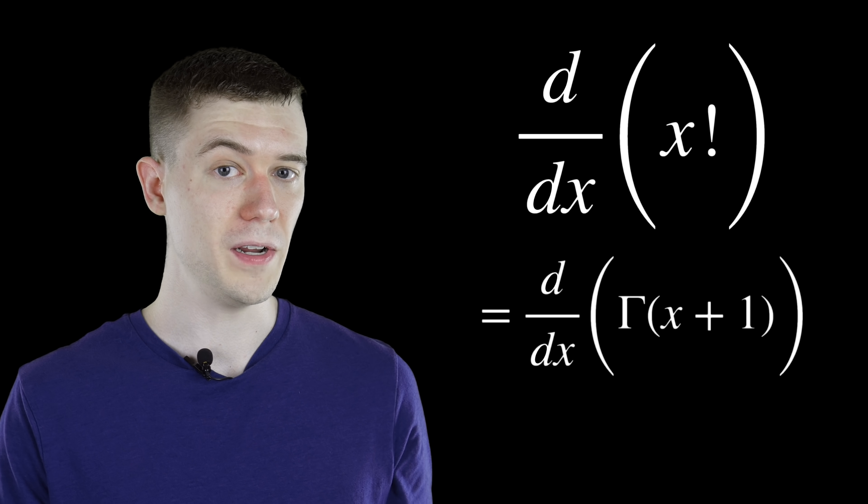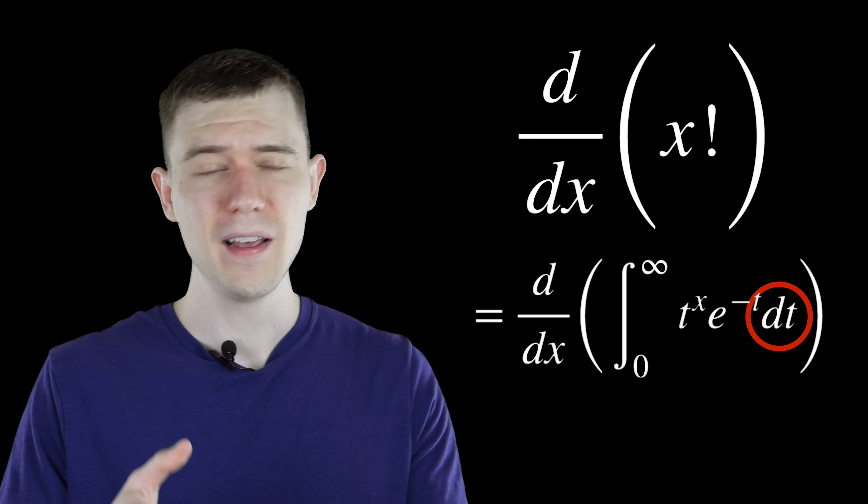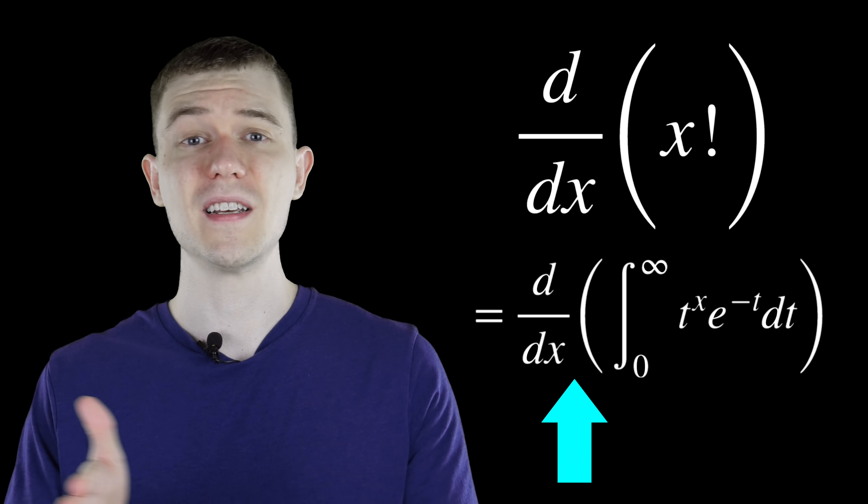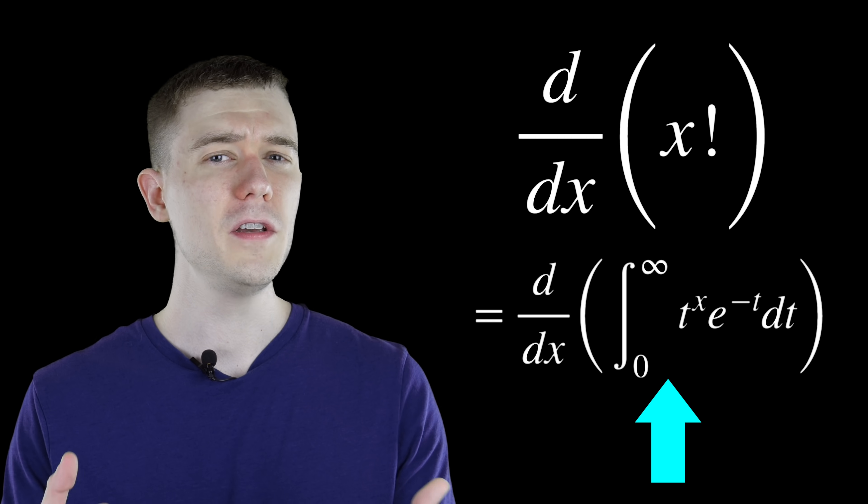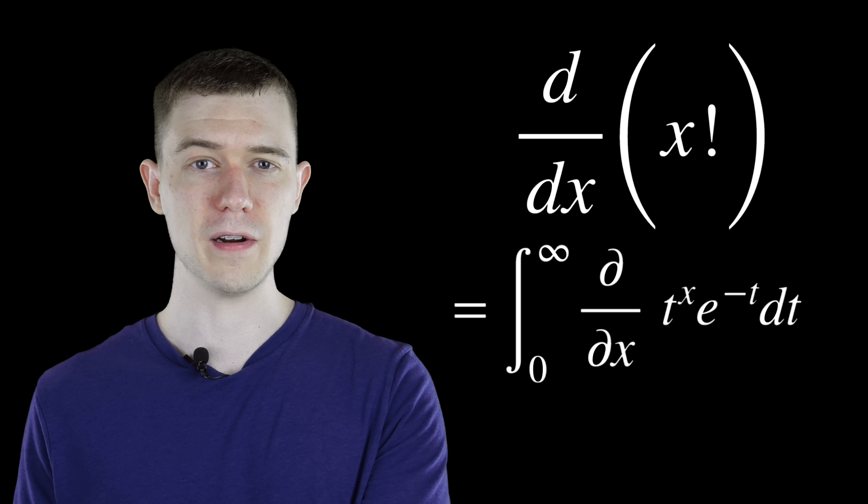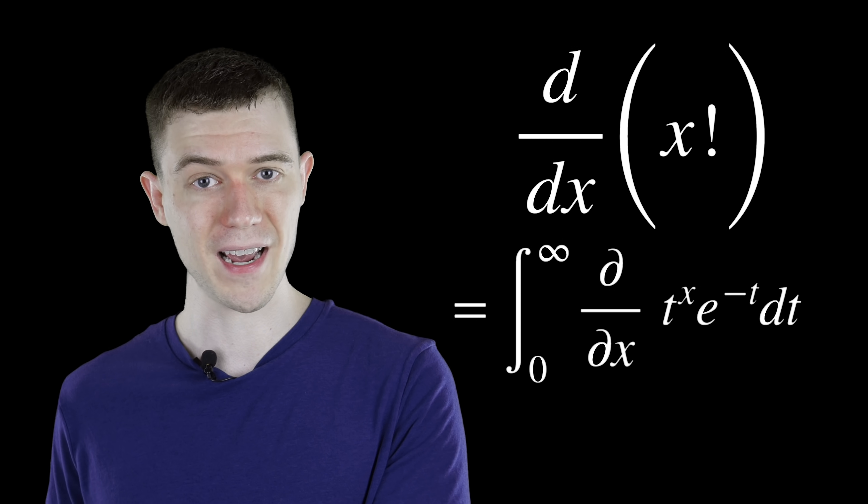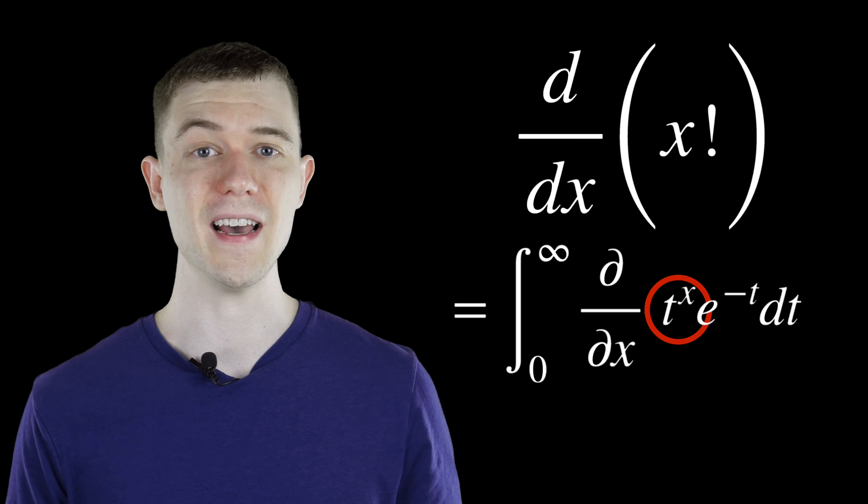And so this will be our computation for d/dx of x factorial. So we have to take the derivative of this improper integral, and notice that the differential inside the integrand is dt. Thus, the dx we can just slip inside, and we should really be using partial derivative symbols here, since we're dealing with two different variables. So let's take the partial derivative of this with respect to x.